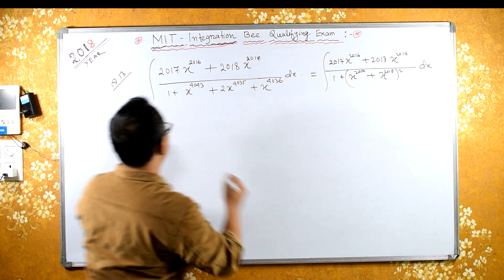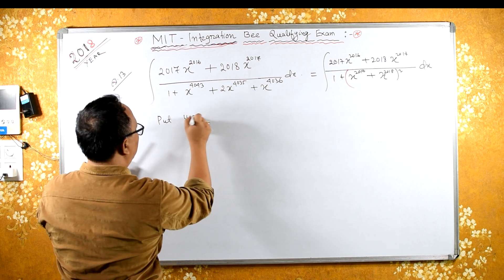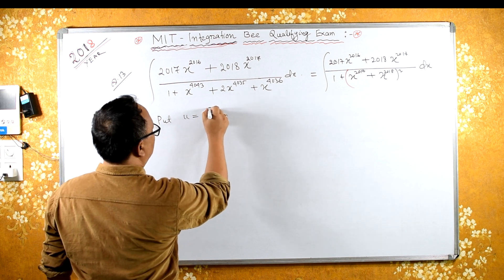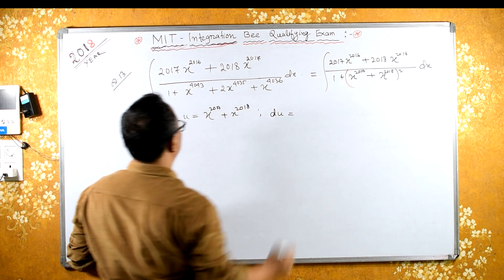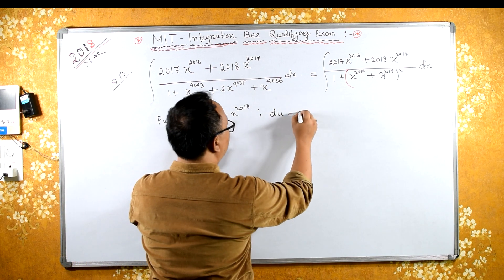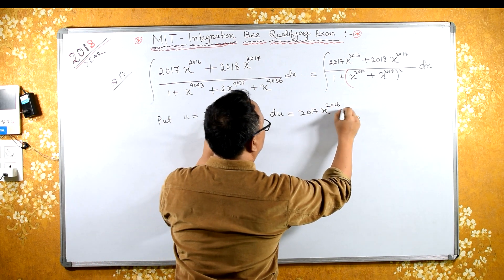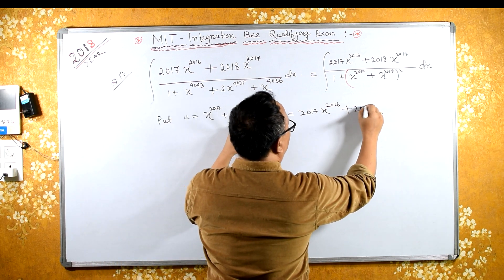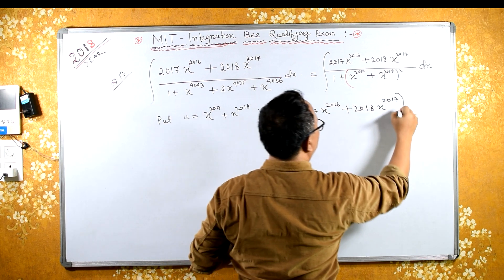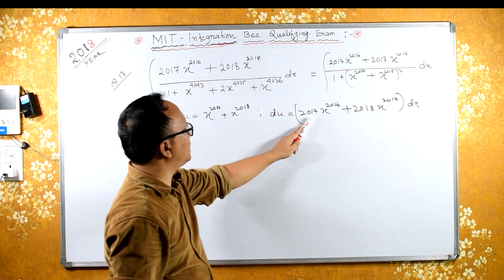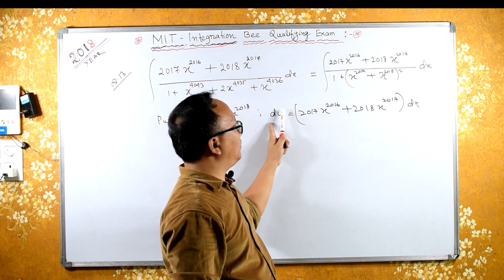Now let's use substitution. Let u equal x raised to 2017 plus x raised to 2018. Then du equals 2017 times x raised to 2016 plus 2018 times x raised to 2017, into dx. This entire upper term becomes du.